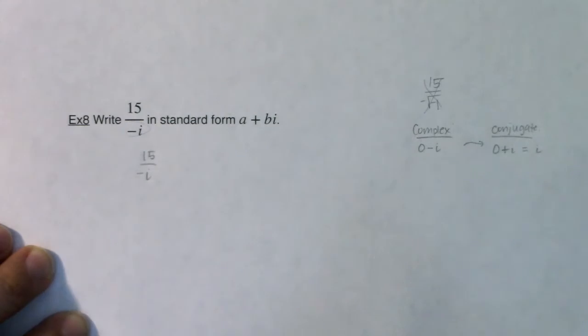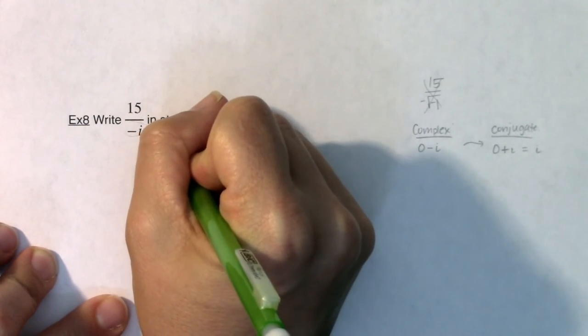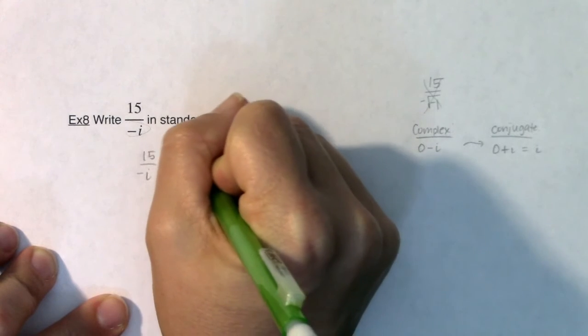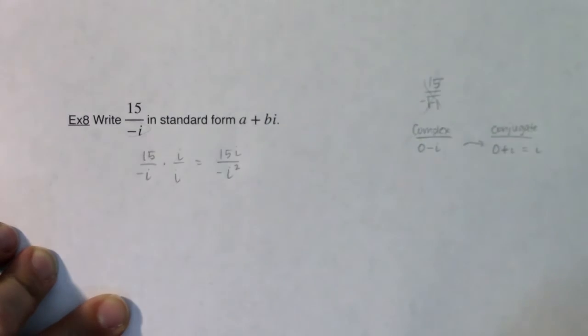What I'm basically going to do here is take my fraction with the radical in the denominator and multiply by the conjugate, so I'm going to multiply by i over i. The numerator is 15i, and if we look at the denominator, we've got negative i squared.